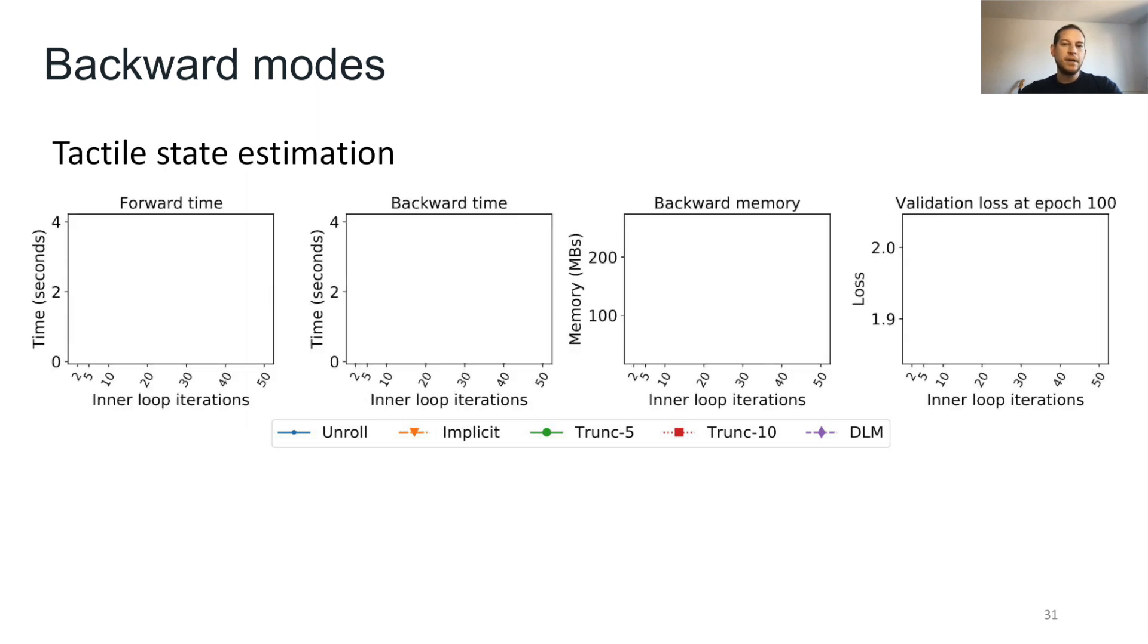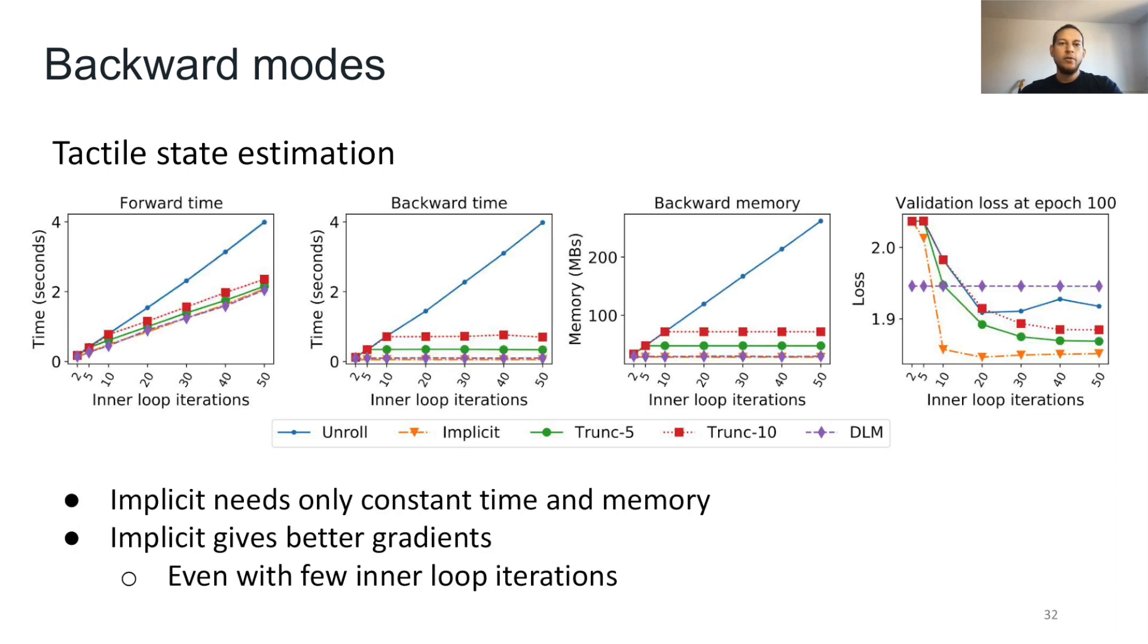We analyze the backward modes in a tactile state estimation problem. We compare forward and backward times, backward memory, and validation loss, each with increasing number of optimizer iterations. We find that with increasing number of iterations, the compute and memory increases linearly for unrolling, but stays constant for implicit differentiation. Implicit also provides better gradients, even with fewer optimization iterations.